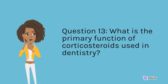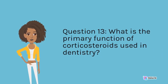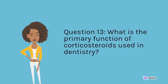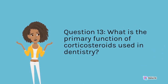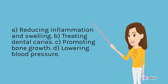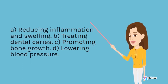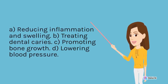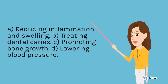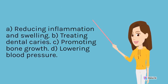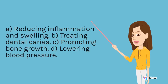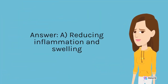Question 13. What is the primary function of corticosteroids used in dentistry? A. Reducing inflammation and swelling. B. Treating dental caries. C. Promoting bone growth. D. Lowering blood pressure. Answer: A. Reducing inflammation and swelling.